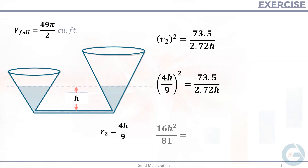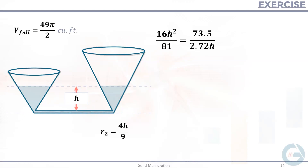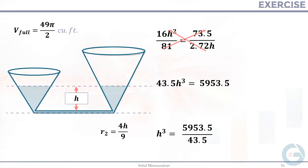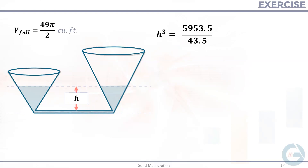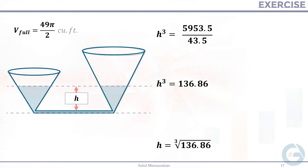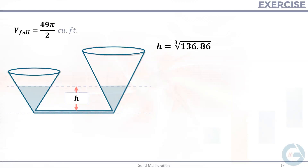Squaring 4H/9 gives 16H²/81. Cross multiplying: 16H² × 2.72H = 73.5 × 81, so 43.5H³ = 5953.5. Dividing both sides by 43.5 gives H³ = 136.86. Taking the cube root: H = ∛136.86 ≈ 5.15 feet.